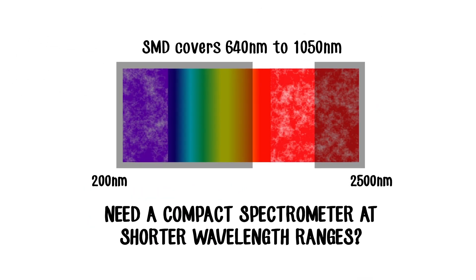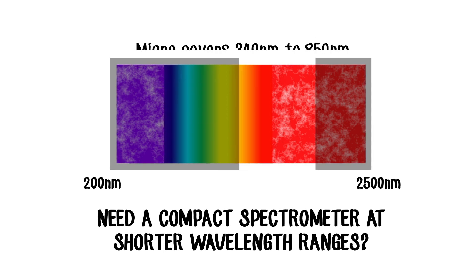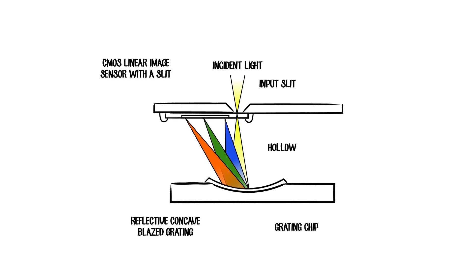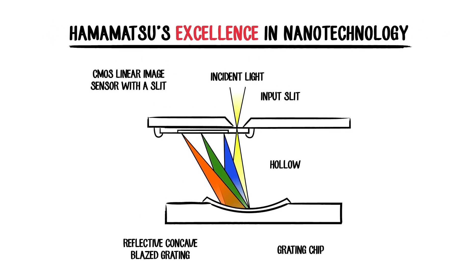What if you need a compact spectrometer at shorter wavelength ranges? In this case, we've created the micro-spectrometer. Just like the SMD spectrometer, the micro-spectrometer benefits from Hamamatsu's excellence in nanotechnology. This device contains a micro-etched input slit, a nano-imprinted grating, and an active pixel CMOS image sensor.